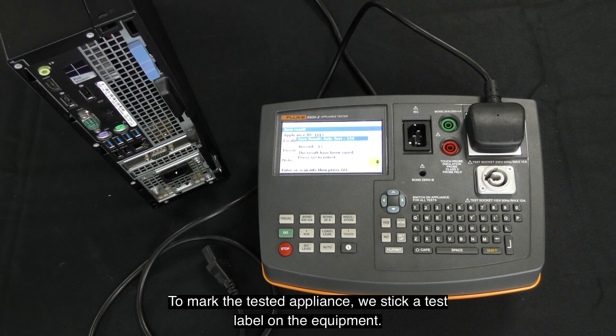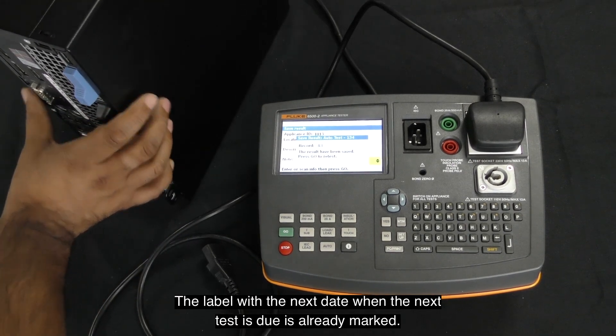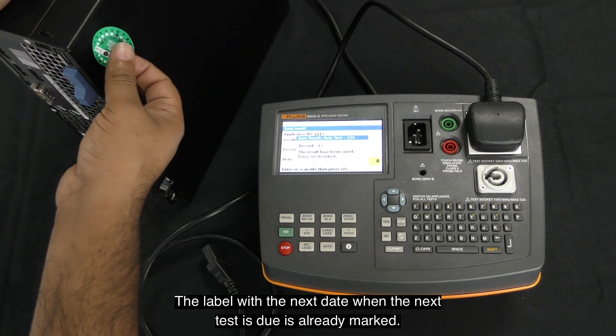To mark the tested appliance, we stick a test label on the equipment. The label with the next test date, when the next test is due, is already marked.